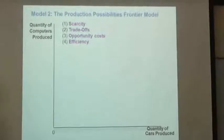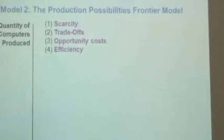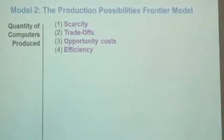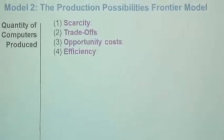We're going to consider four things that this graph is going to give us some insights about. We're going to learn some things about scarcity, some things about what's meant by trade-offs, we're going to define opportunity costs, and we're also going to discuss economic efficiency.